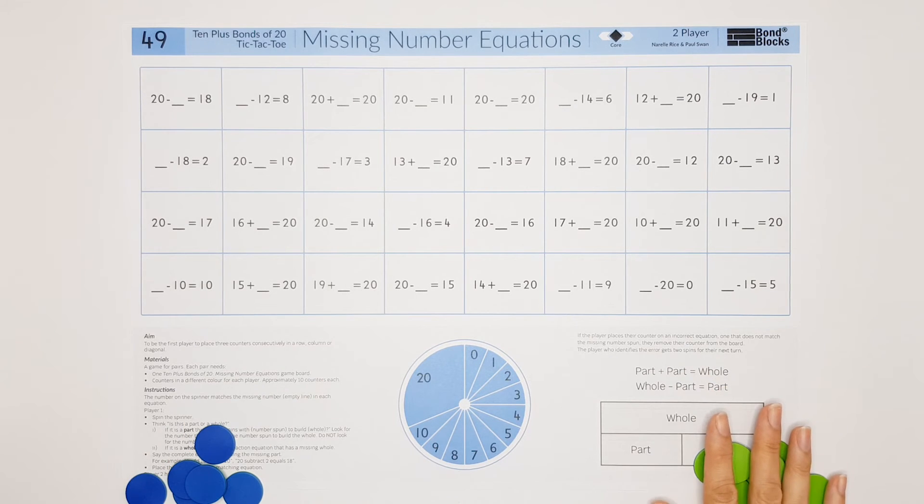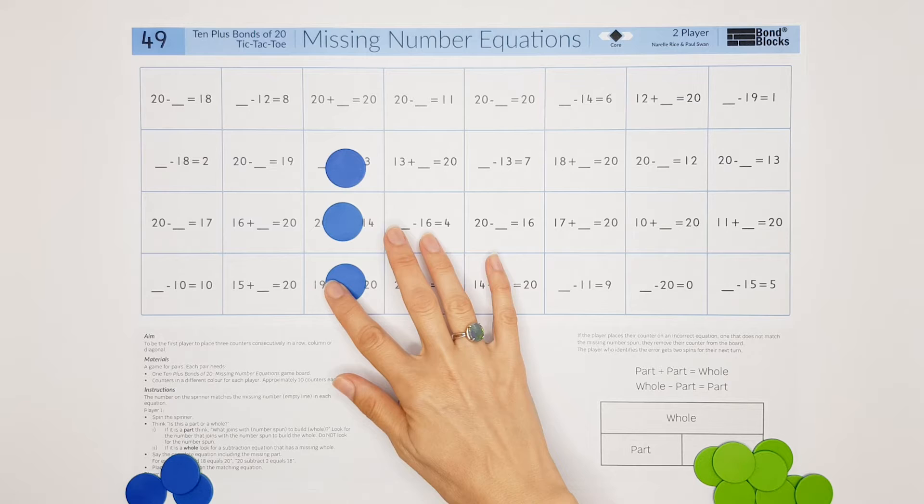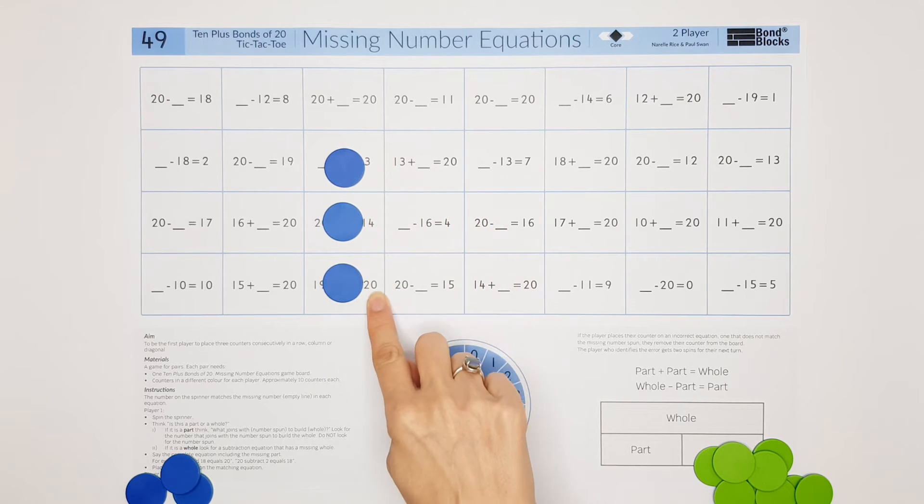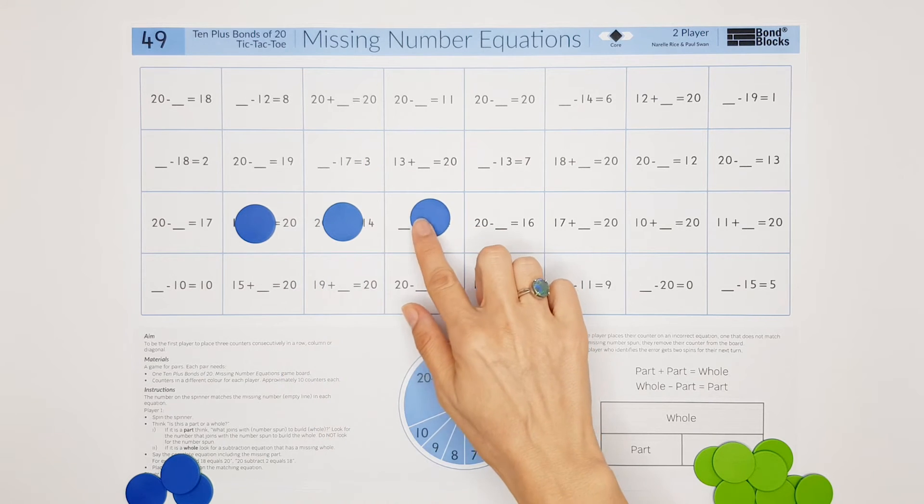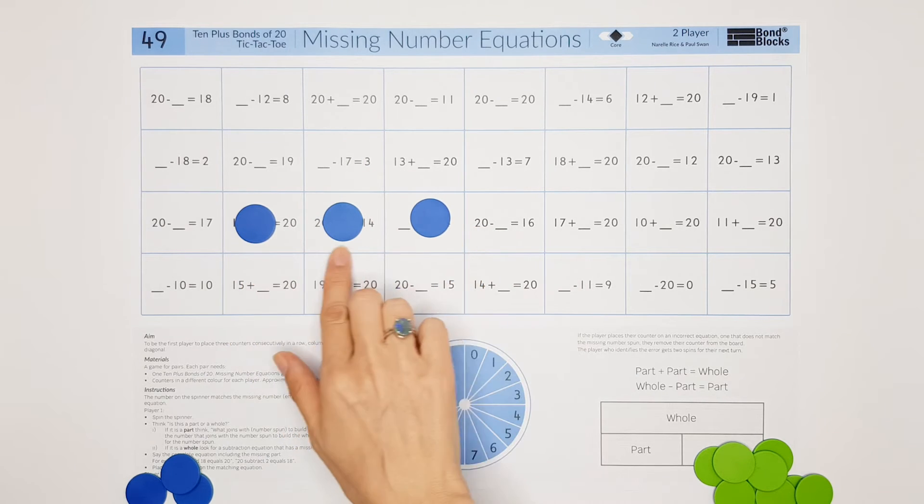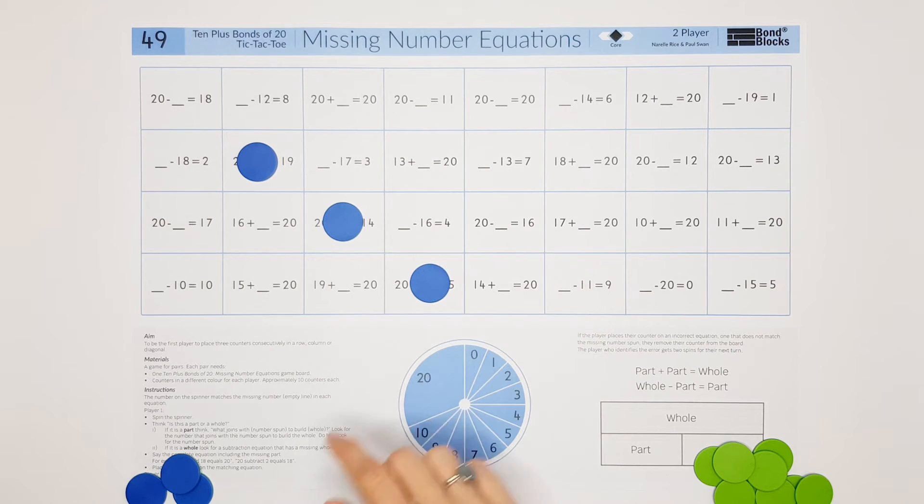Let's begin to complete this activity. Each player needs approximately 10 counters. The aim is to be the first player to place three counters consecutively, either in a column going vertically up and down, in a row going horizontally across, or in a diagonal in that direction or that direction.